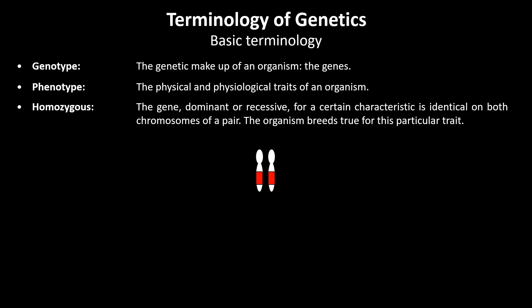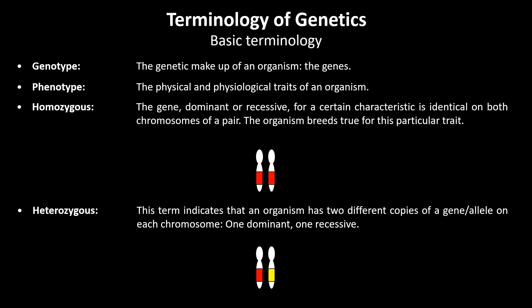When a dominant or recessive gene for a certain characteristic is identical on both chromosomes of a pair, we call the organism homozygous for this particular trait. This means that the organism will breed true for this trait. When an organism has two different copies of a gene on each chromosome, it is called heterozygous. Both versions of the gene can be passed on to the next generation.